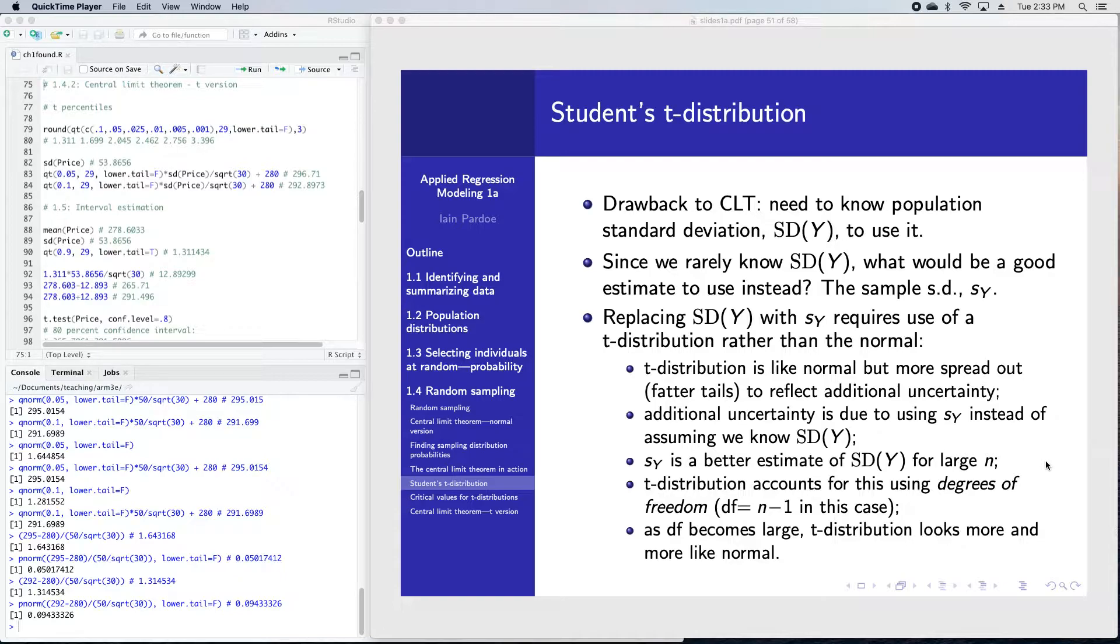Since we're using a sample estimate for a population parameter, as usual with estimating population parameters, we're going to get a better estimate if we have a larger sample size. So it makes sense that the sample size will have an impact on how much additional uncertainty we have to build into the procedure.